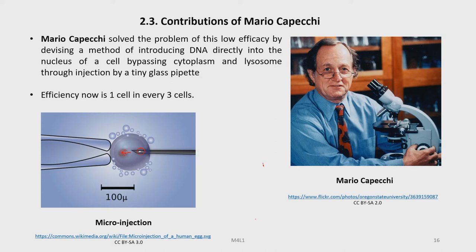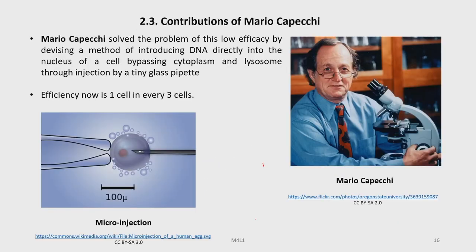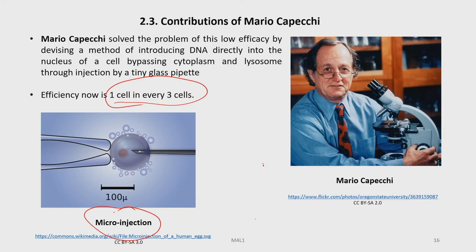The efficiency immediately improved from one in a million cells in the process developed by Weigler to one cell in every three cells. This is done with a special apparatus and human intervention, and this process is known as microinjection.